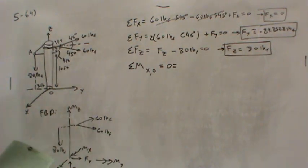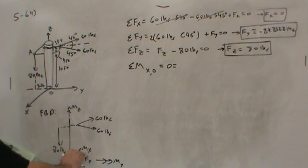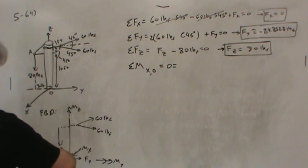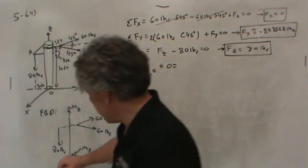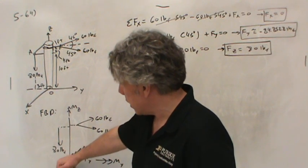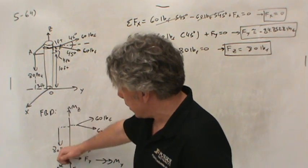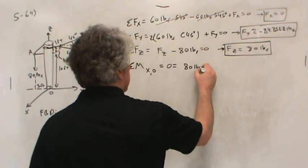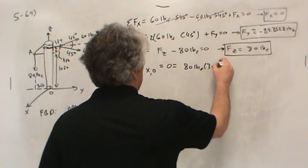So, 80 pounds about the X-axis. Positive X-direction by the right-hand rule is with my thumb pointed in the positive X-direction. And the X-direction actually comes out the board this way. I just have to draw it at an angle to make that clear. So, there's a three-foot moment arm, and in fact, that 80-pound force causes a positive moment. So, 80 pounds times three feet.